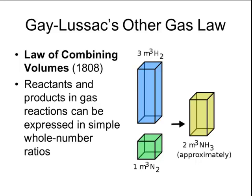For example, if I take three cubic meters of hydrogen and combine that with one cubic meter of nitrogen, I will be able to produce two cubic meters of ammonia. It didn't matter what units of volume he used — the amounts of reactants and products were always able to be expressed in simple whole number ratios.